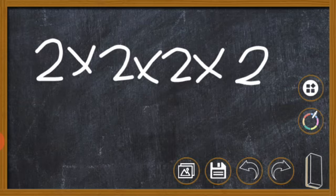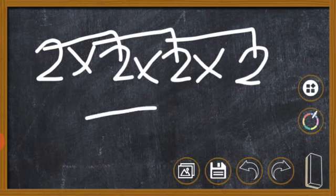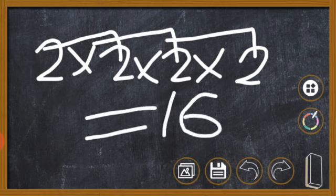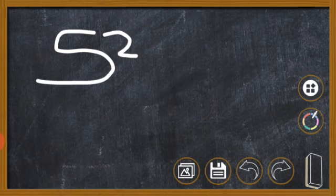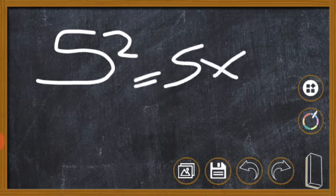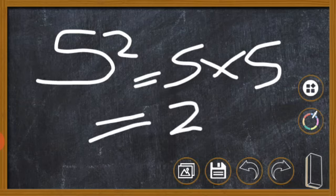Two times two will give us four. Four times two will give us eight. Eight times two will give us sixteen. Therefore, our answer is sixteen. Another expression can come like this. It means five times five. Our answer there is twenty-five.